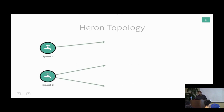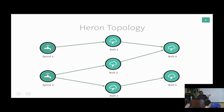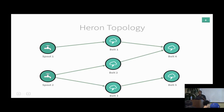To give an example, a topology might have a couple of spouts feeding into a set of bolts in the next stage, which transform the data and pass it to the next stage. One big difference between MapReduce and Heron topologies is that Heron supports an arbitrary number of stages, whereas MapReduce is limited to two stages per job, requiring chaining separate jobs for more stages.